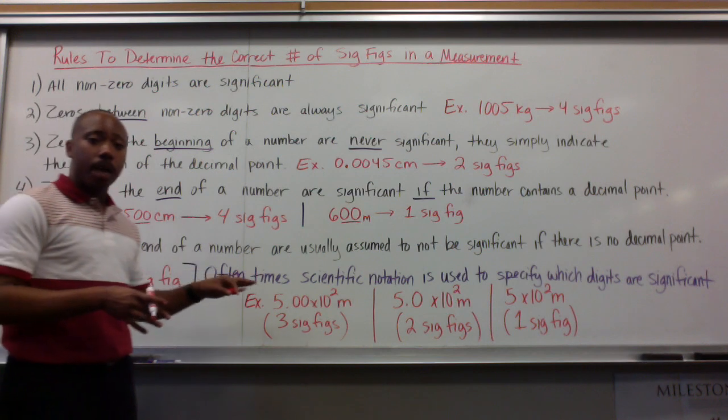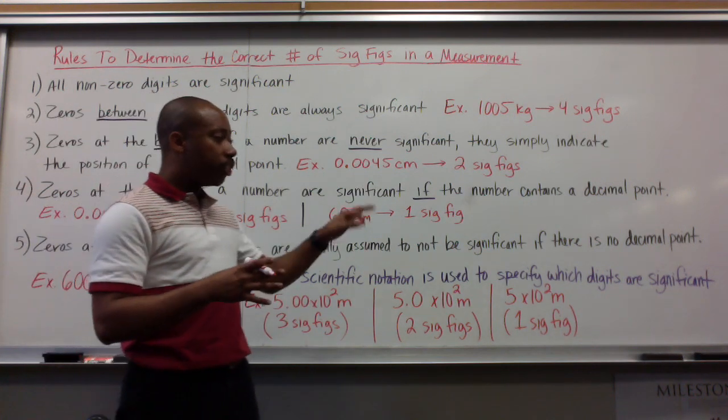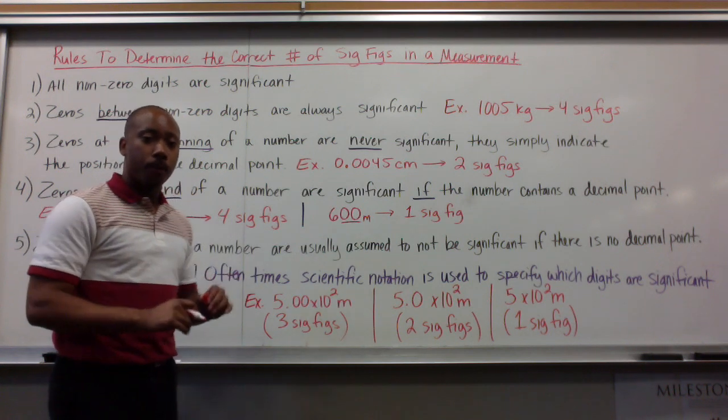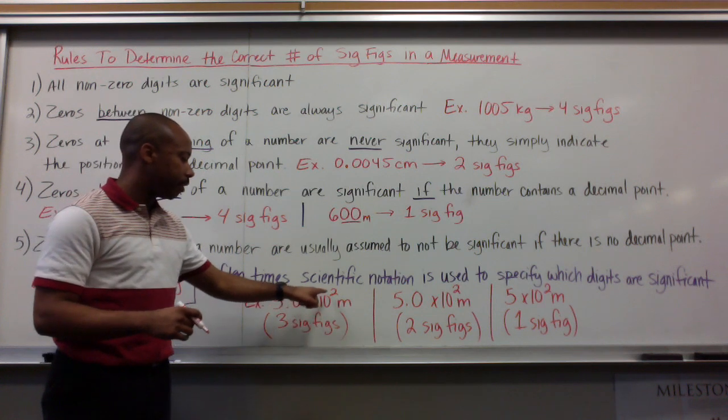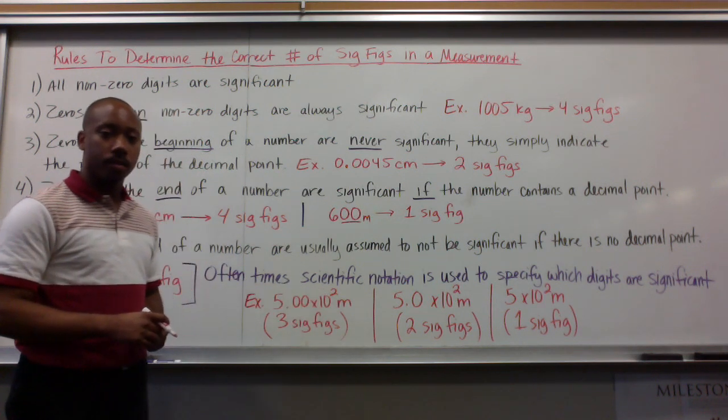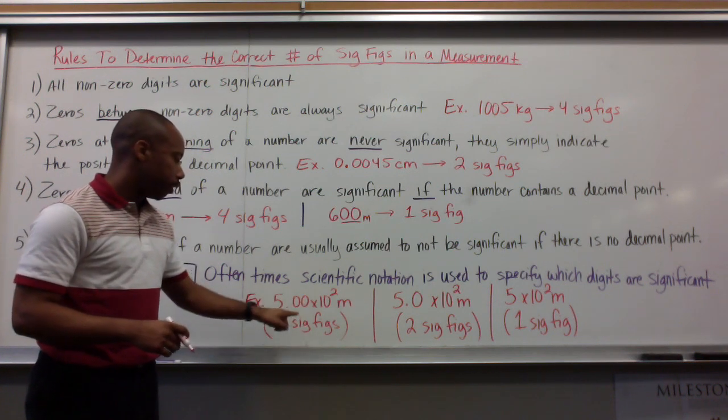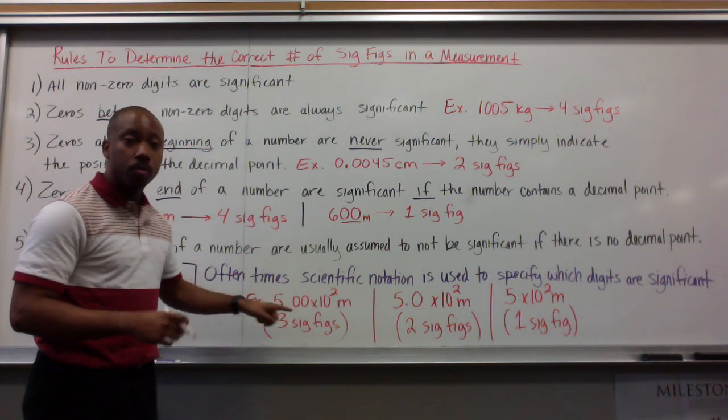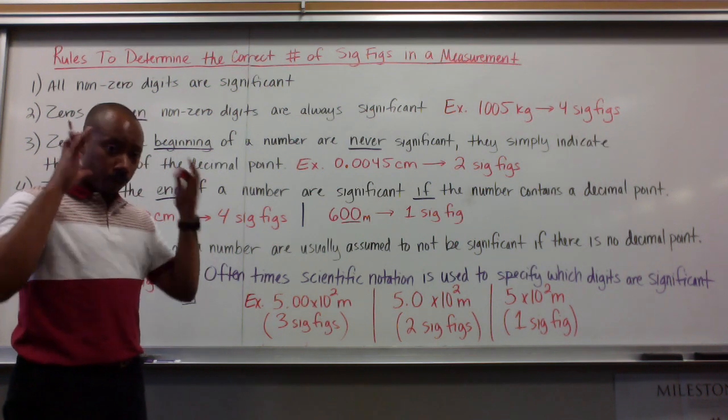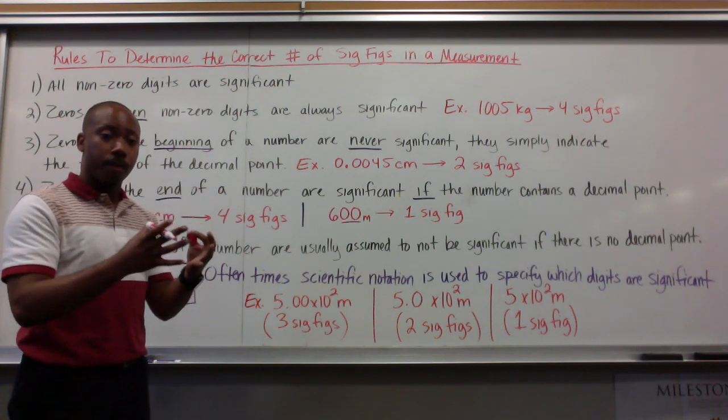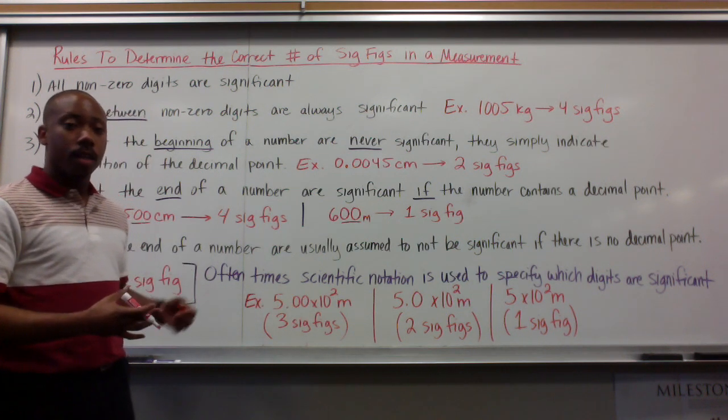Now, when this happens, oftentimes, scientific notation is used to specify which digits are significant. For example, if I have 5.00 times 10 to the second meters, I have three significant figures here. One, two, three. These zeros come after a decimal point, so I would call them significant. And just for your mental frame of reference, this is 500, five times 10 to the second meters.